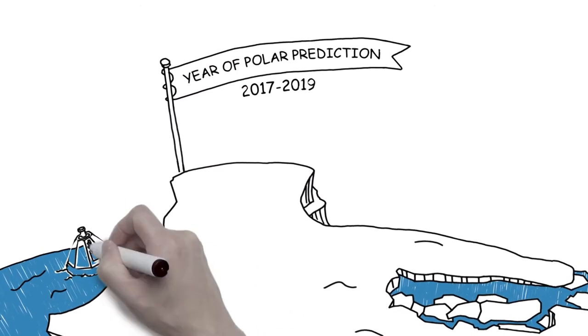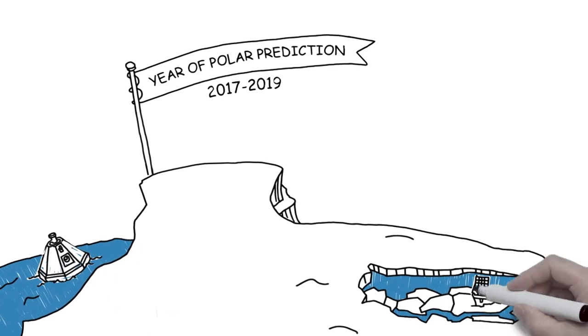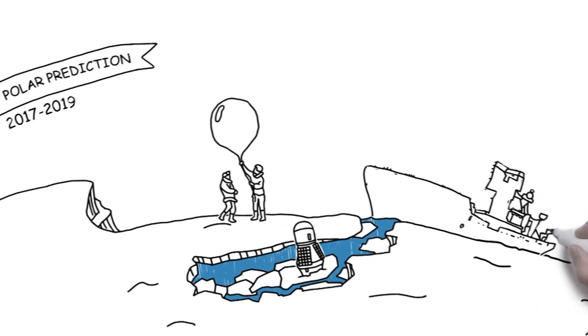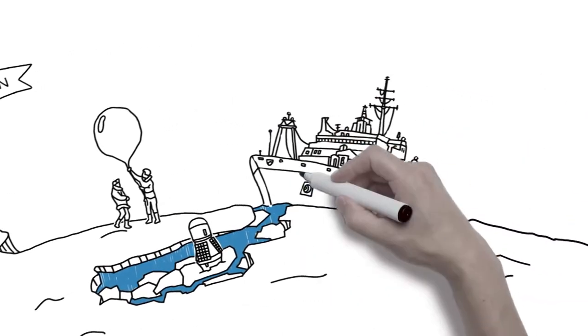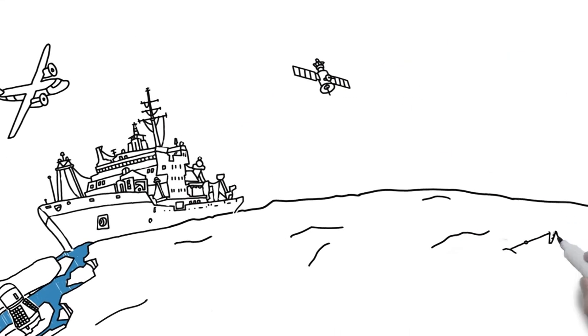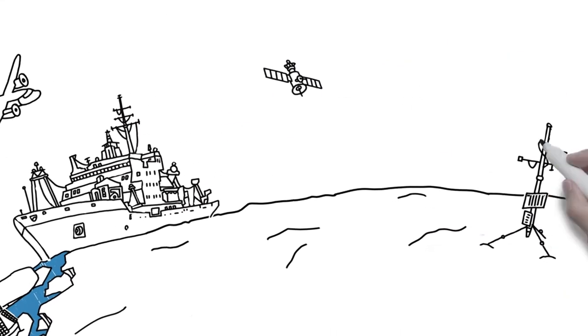researchers and agencies will deploy additional buoys in the ocean and on the ice, launch more weather balloons from meteorological stations and research vessels, coordinate aircraft and satellite missions, and install new automatic weather stations in polar regions.